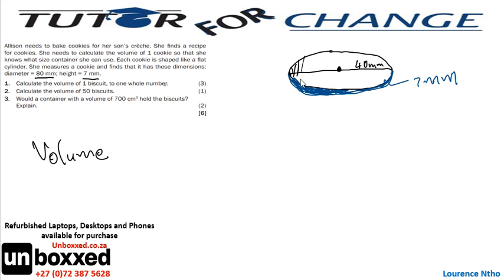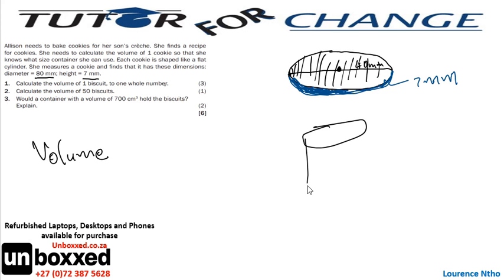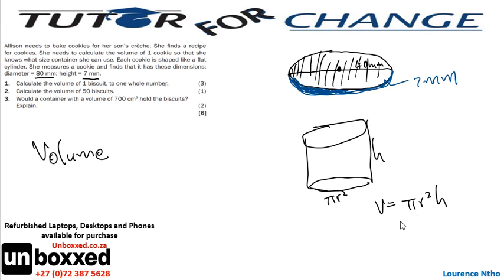When dealing with the cylinder, we said the base area is πr², and the height is h. So to calculate volume, we just need πr²h. Since this is a flat cookie, the height will represent the 7 millimeters.